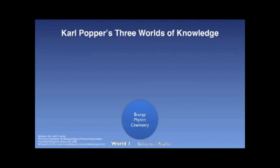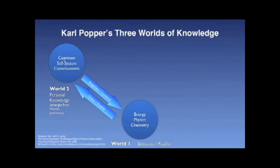World two is the world of mental states and events, or thoughts and ideas. This is the realm of observations, perceptions, as well as psychological states and processes. Essentially, this is the way in which we make sense of the physical world as represented in our memories and in our personal knowledge.